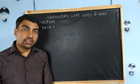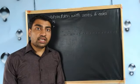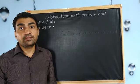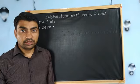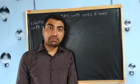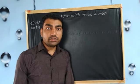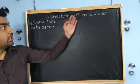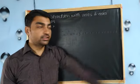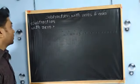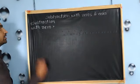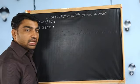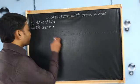How to do subtraction when there are more than one zeroes in the first number? My name is Atmaram and in this video we will learn subtraction with zeroes and ones. So subtraction means zeroes — let's take one example for that.